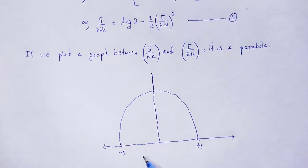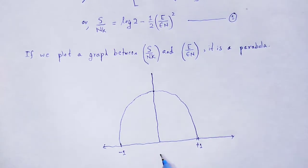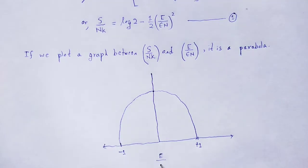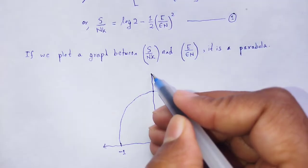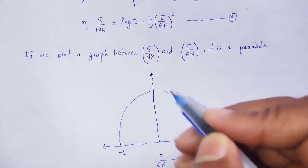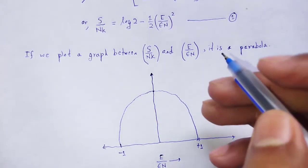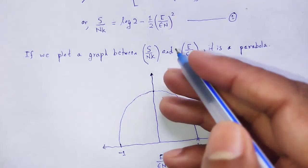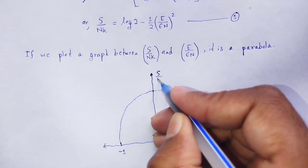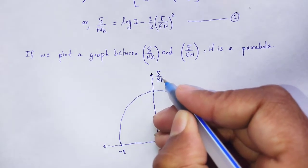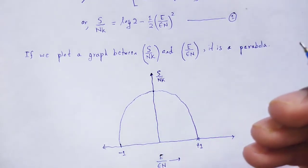The graph is a parabola. On the x-axis we take E divided by epsilon n, and on the y-axis we take S divided by n k.